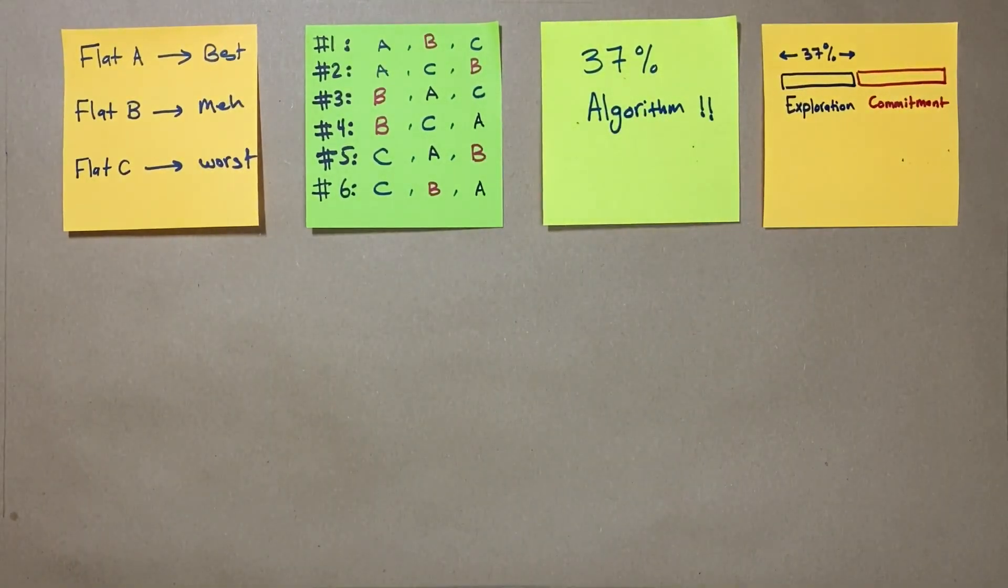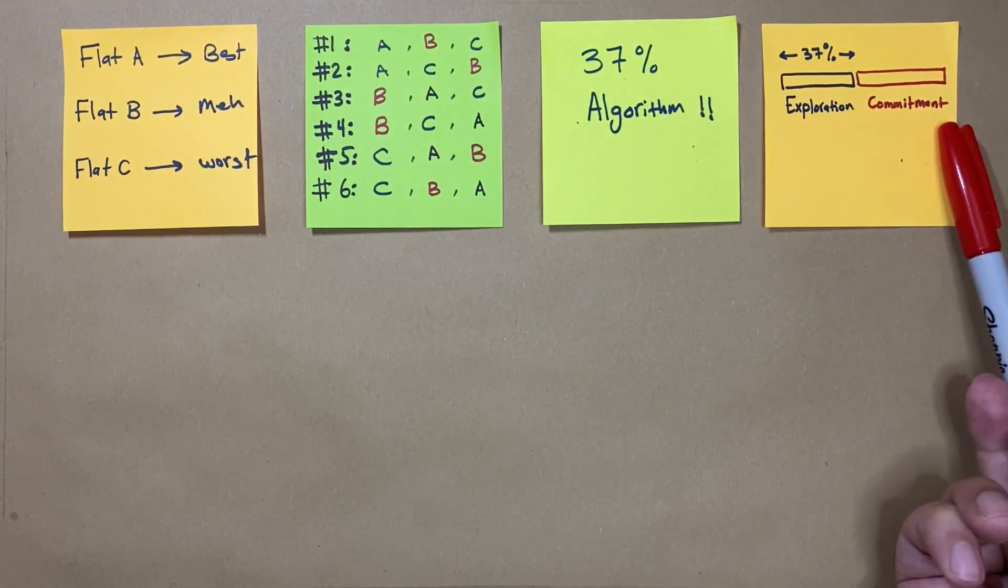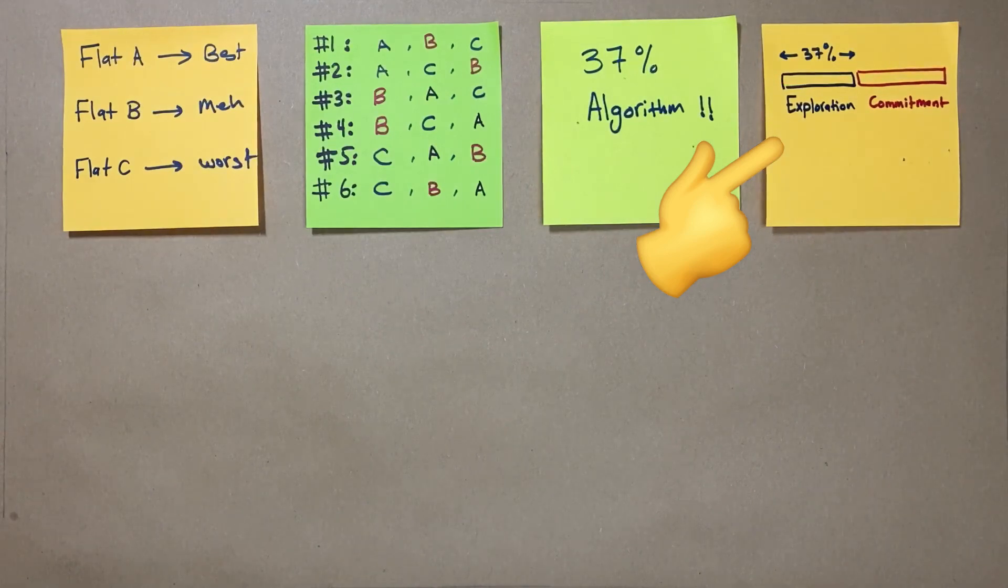The 37% algorithm suggests splitting the search area into two phases: the exploration phase and the commitment phase, where the exploration phase is 37% of the available options, hence the name.